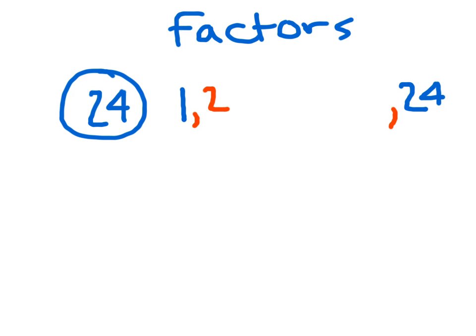2 times what is 24? The answer is 12. Then we'll continue: is 24 divisible by 3? Yes — 3 goes with 8 as a factor. We're getting closer and closer together. Then we check 4: 24 divided by 4 is 6, so 4 and 6 are factors of 24.